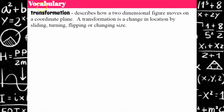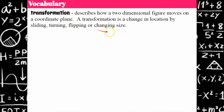Vocabulary first. Transformation describes how a two-dimensional figure moves on the coordinate plane. A transformation is a change in location by sliding, which is a translation; turning, which is rotation — what we're doing today; flipping, which is a reflection; or changing size, which is a dilation.